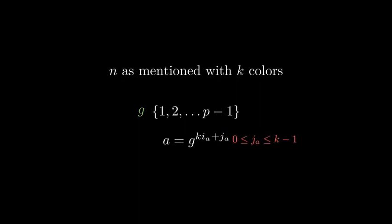Note that j_a lies between 0 and k, therefore there are k different possibilities for j_a, hence we can color the numbers with k colors.